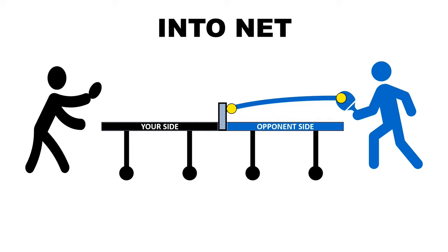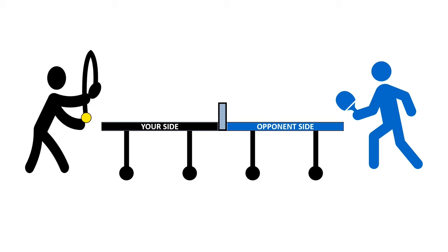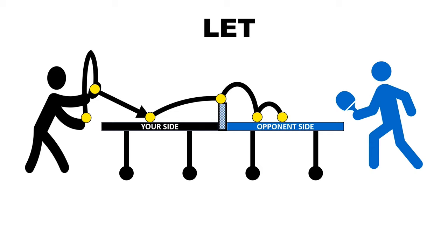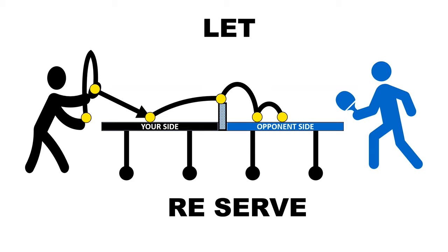One thing to note: when you are serving, if the ball hits the net and goes to the other side, it's called a 'let' and you reserve. But if this happens during a rally, that's fine — you just continue the game.